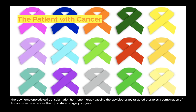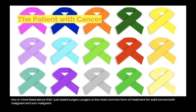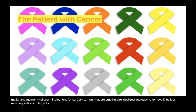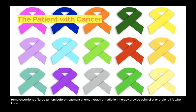Surgery is the most common form of treatment for solid tumors, both malignant and non-malignant. Indications for surgery include tumors that are small in size, localized, and easy to remove; to debulk or remove portions of large tumors before chemotherapy or radiation therapy; and to provide pain relief or prolong life when no chance of cure is possible — that is, palliative care.